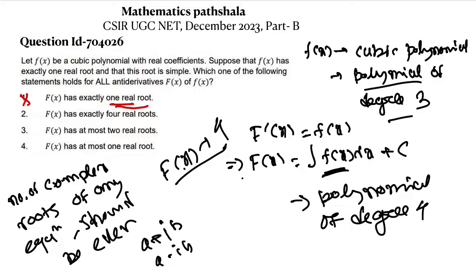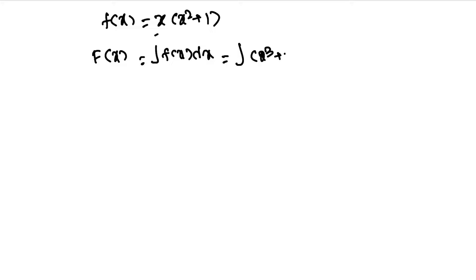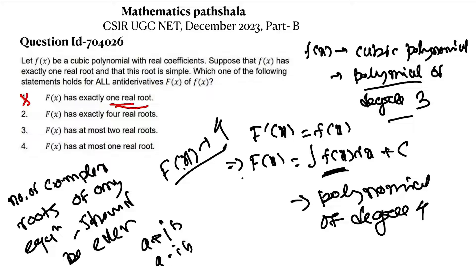In Option 2, it says F(x) has exactly four real roots. Let's take the example f(x) = x(x² + 1). We can see that f(x) has one real root, x = 0, and it is simple (not repeated). Now F(x) = ∫f(x)dx = ∫(x³ + x)dx = x⁴/4 + x²/2. Taking x²/4 common, we get x²(x² + 2). We can see that F(x) has two real roots: x = 0 (repeated). So Option 2 — exactly four real roots — is false.